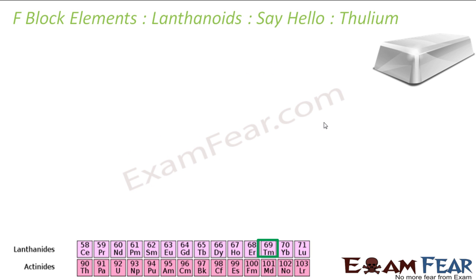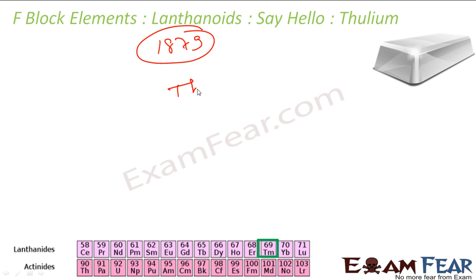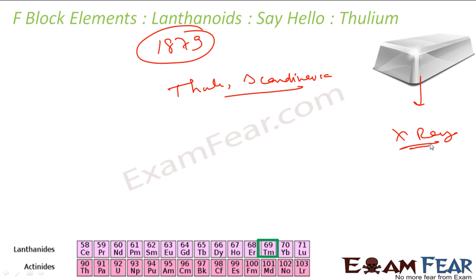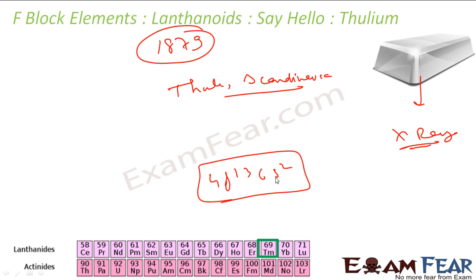Thulium is a silvery-white, soft metal that reacts with both water and air. Also discovered around 1879, it was named after Thule, a place in Scandinavia. It is used as an X-ray source. Its electronic configuration is 4f¹³ 6s².